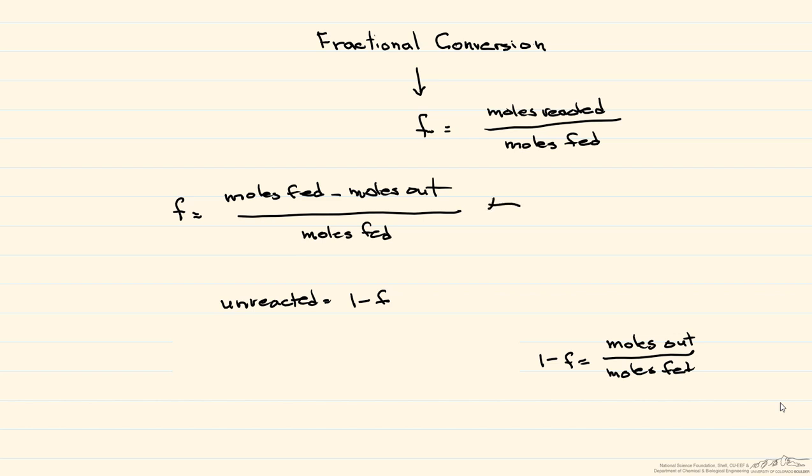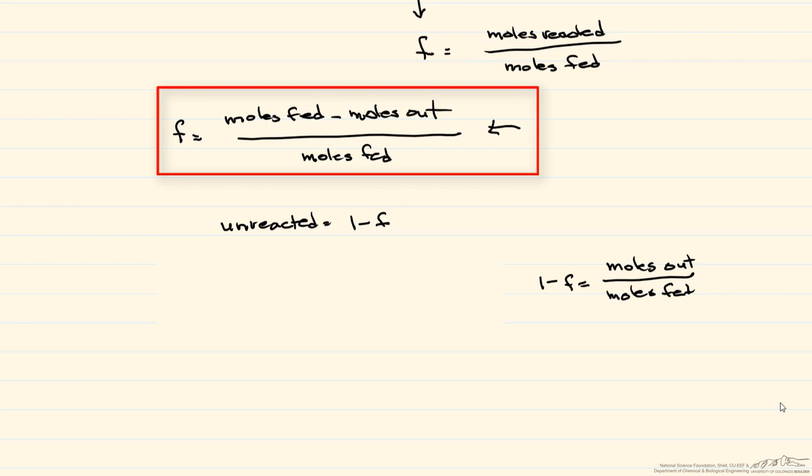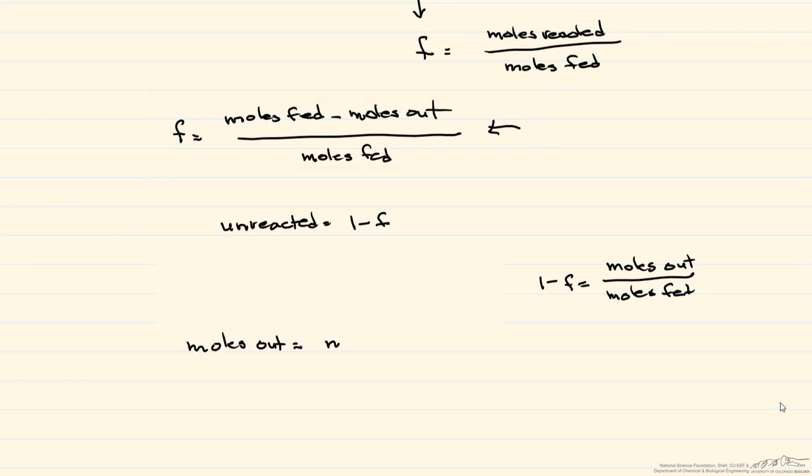And so if we go back to this equation, what we find is that the moles out are equal to the moles fed minus this fractional conversion times the moles fed. And you can see by dividing through by moles fed, the fraction unconverted is equal to one minus F.